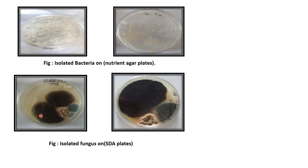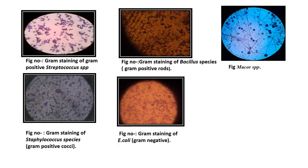You can see Penicillium and Aspergillus — Aspergillus is black in color and Penicillium is green. This is the Gram staining of the bacterial isolates: Gram staining of Streptococcus species, Gram staining of Bacillus, LCB mount of Mucor species, Gram staining of E. coli, and Gram staining of Staphylococcus species. Not all diagrams could be shown as the slides are very extensive.